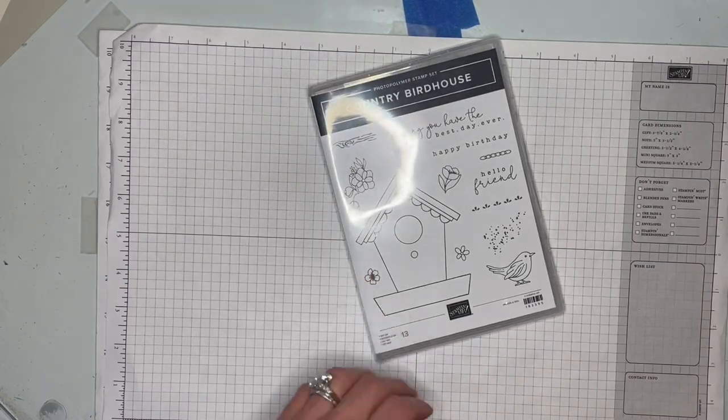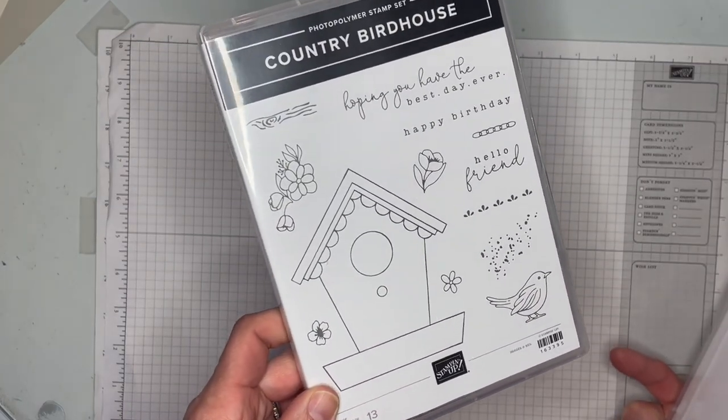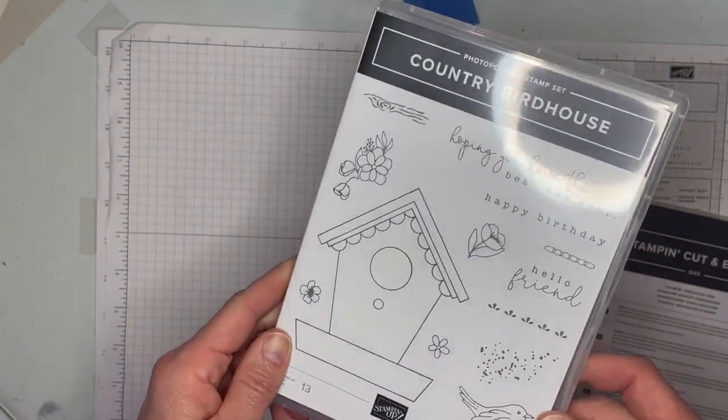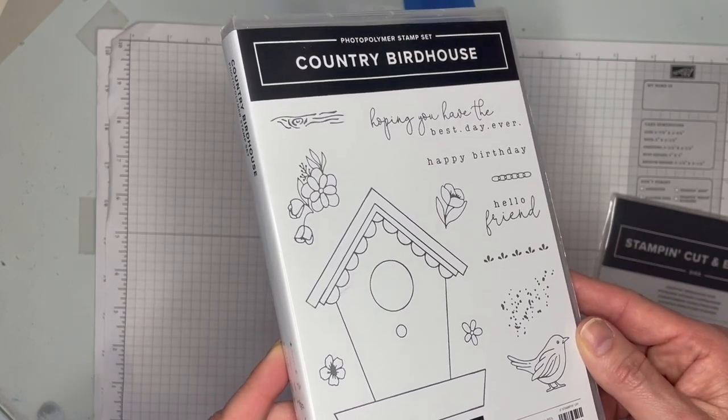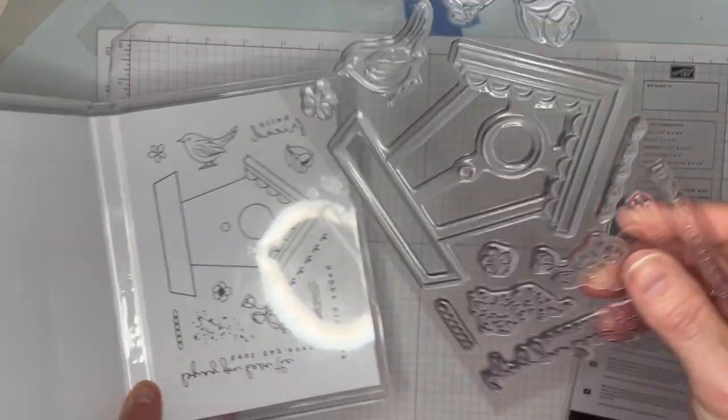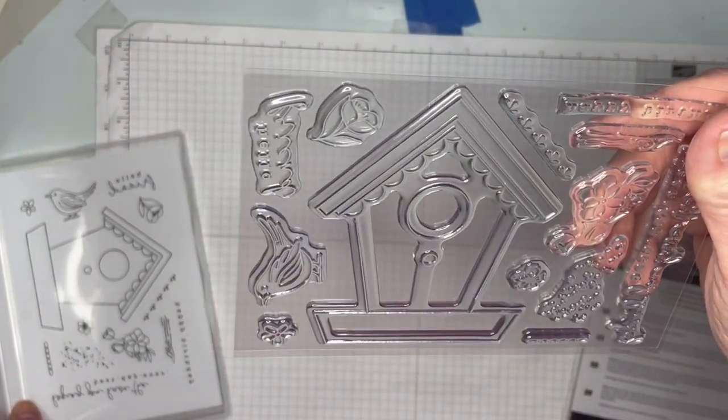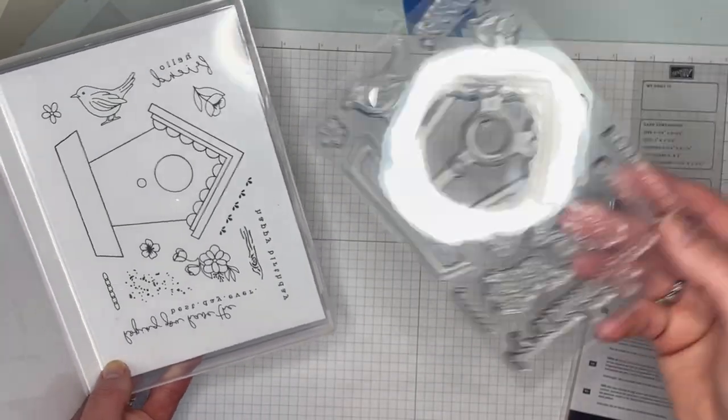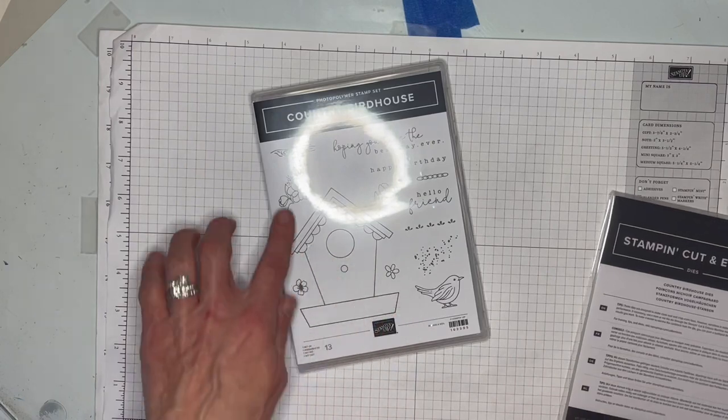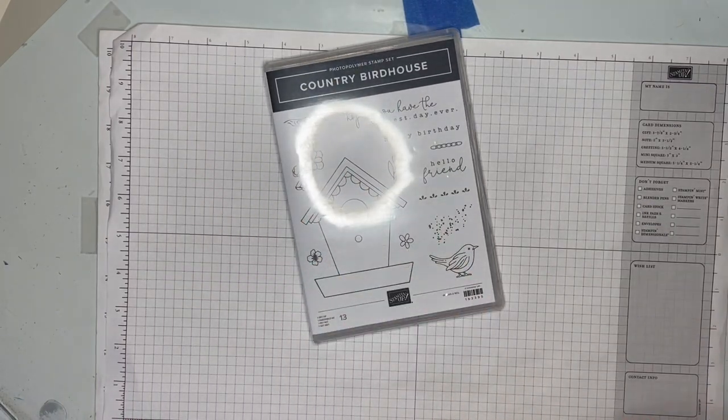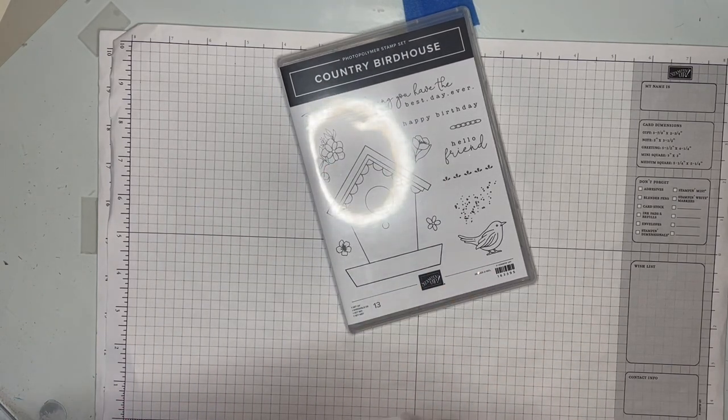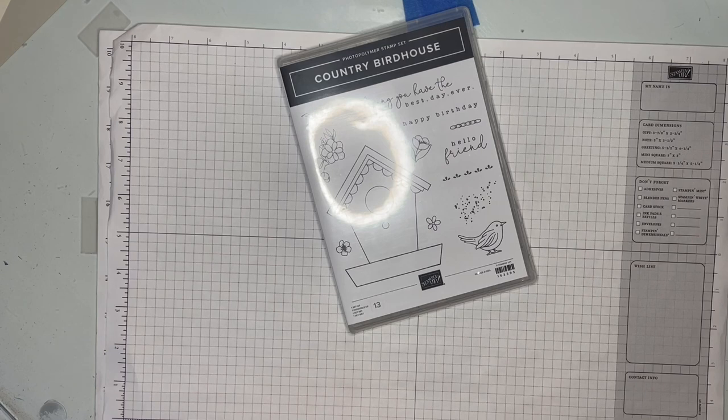All right. Here we go. The country birdhouse stamp set. It's a bundle. There's dies. Look at how cute that birdhouse is and little flowers and stuff to decorate and sweet little bird. You can see all the images and that's photopolymer. So it's a nice size set. I like ones where there's like focal, but then there's also some smaller accent pieces.